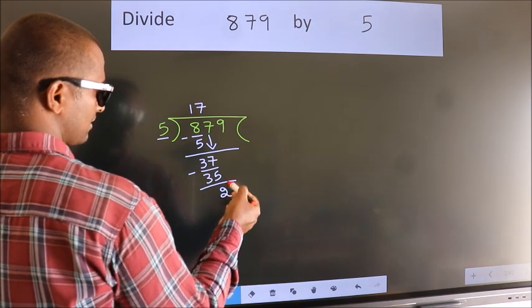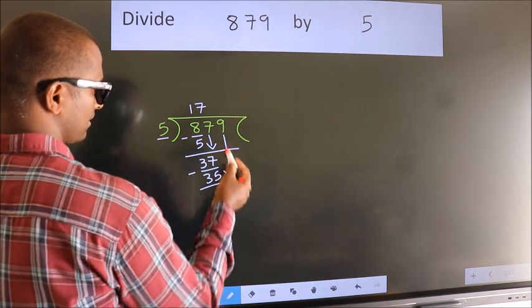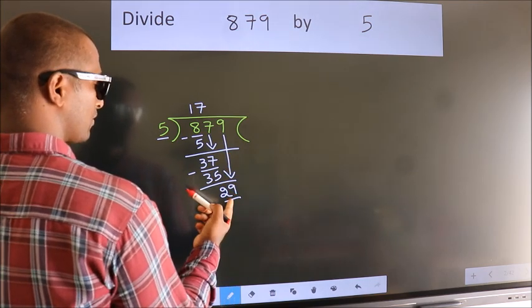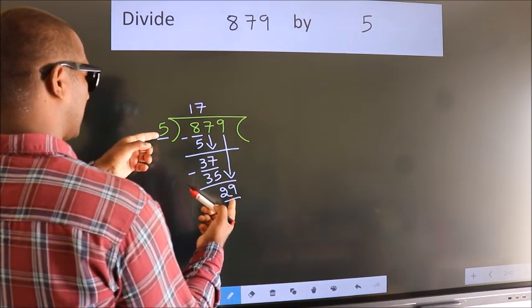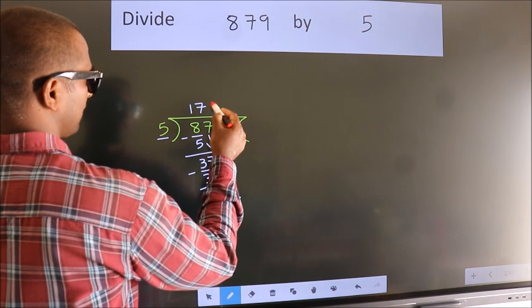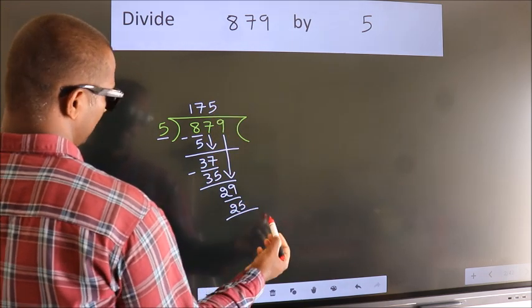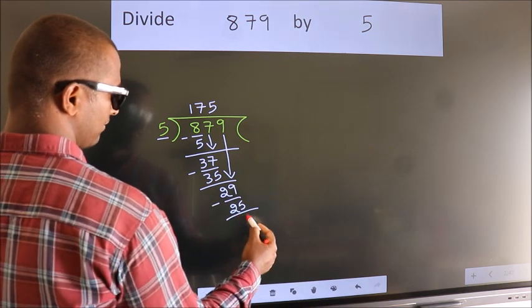After this, bring down the beside number. 9 down, so 29. A number close to 29 in the 5 table is 5 5s 25. Now we subtract. We get 4.